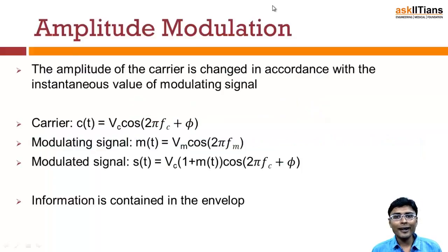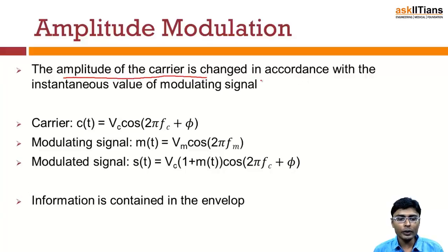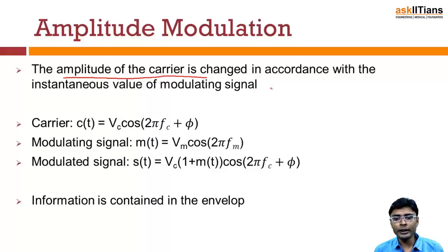First of all, let us start with amplitude modulation. In amplitude modulation, the amplitude of a carrier is changed in accordance with the instantaneous value of the modulating signal. In the previous part we have seen there are three types of modulation.